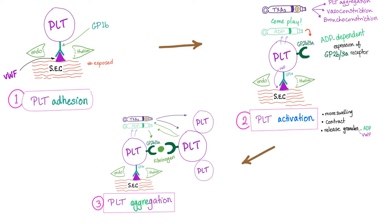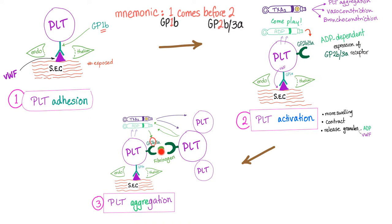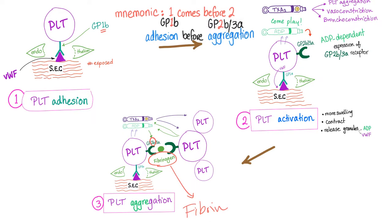Then we have platelet activation. They start to secrete thromboxane A2 and ADP. ADP will express the receptor called GP2B3A — a glycoprotein — and this GP2B3A is important because it allows one platelet to attach to another, with molecular fibrinogen in between. So this is primary hemostasis. Secondary hemostasis is converting this fibrinogen into strong fibrin meshwork. The protein that does that is called thrombin.